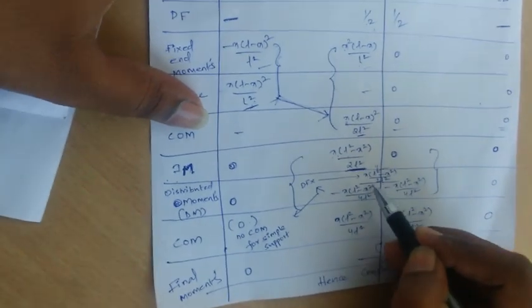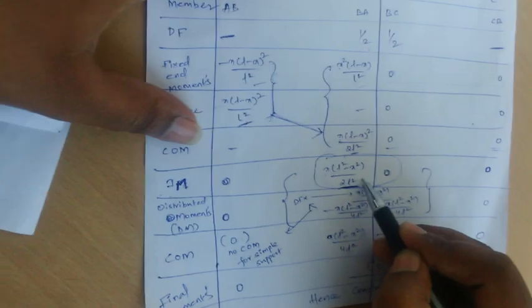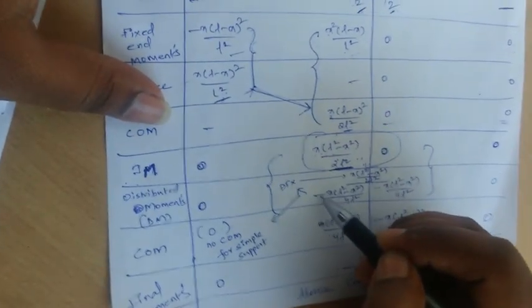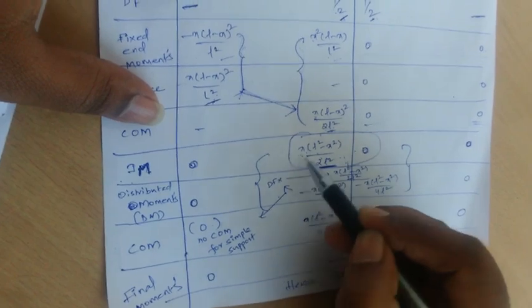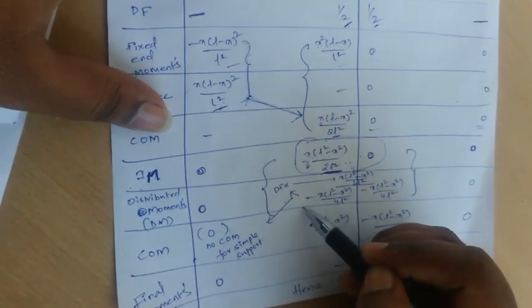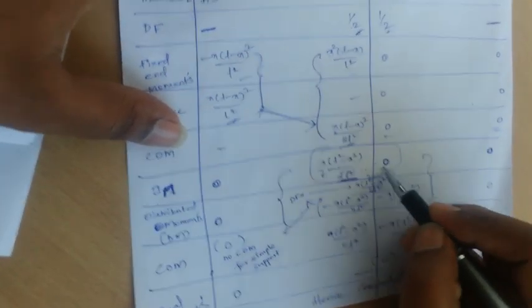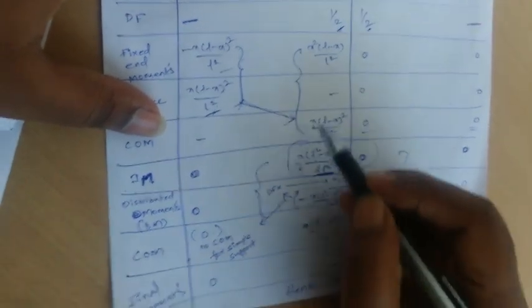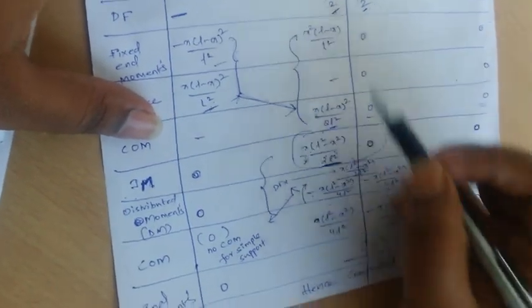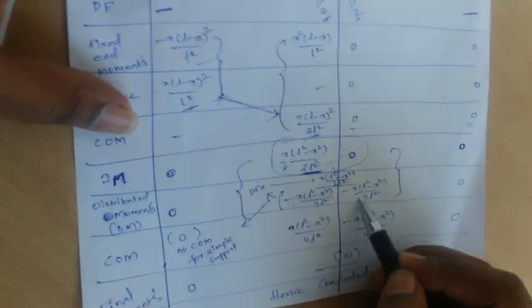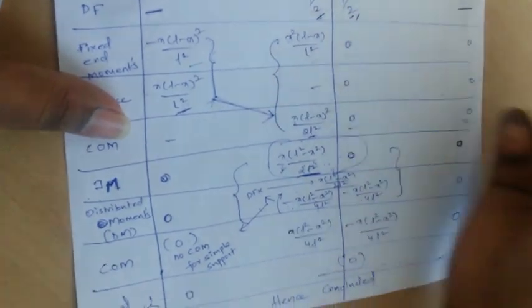The difference at joint B is not zero, so we distribute moments with respect to the distribution factors. The distribution moment equals the distribution factor times the unbalanced moment, applied in the opposite direction. This gives minus X(L²−X²)/(4L²) for both BA and BC, with a plus sign for BC since it is in the opposite direction.